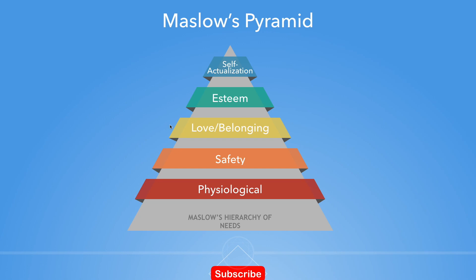Maslow's hierarchy of needs is often portrayed in the shape of a pyramid with the largest, most fundamental needs at the bottom and the need for self-actualization at the top. The most fundamental four layers contain what Maslow calls deficiency needs or D-needs: esteem, friendship and love, security, and physical needs. If these deficiency needs are not met, the individual will feel anxious and tense. Maslow's theory suggests that the most basic level of needs must be met before the individual will strongly desire higher level needs.